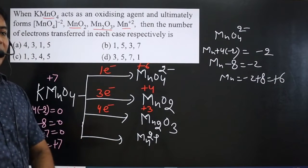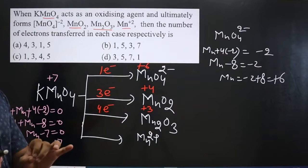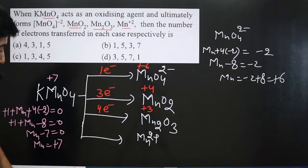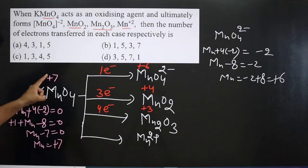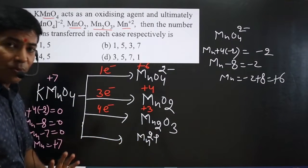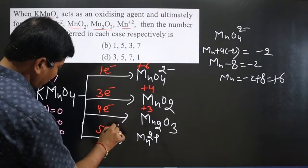Now this is a monoatomic ion. In monoatomic ions, whatever the charge is equal to their oxidation number. So this is +2 oxidation number. This side +7 and this side +2, so 7 - 2 = 5 electron transfer.